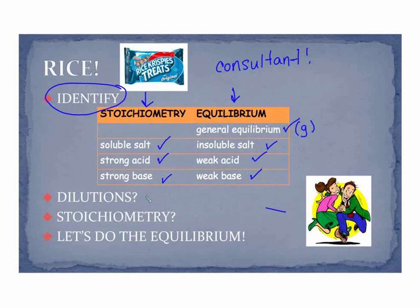Once we've identified, you want to check every time: do you need to do dilutions? Is there a stoichiometry? Do we have a soluble salt, strong acid, strong base, or an acid plus a base which is also a stoichiometry? Do we have any of those?